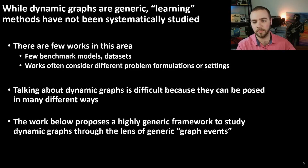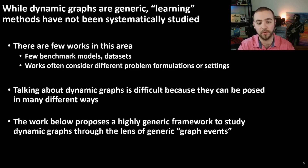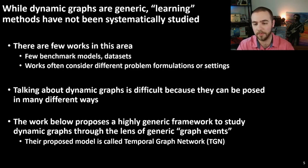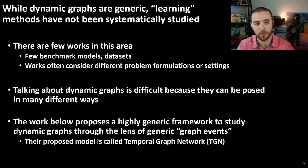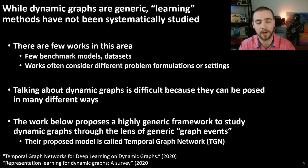We'll be focusing on a single paper that proposes a highly generic framework to study dynamic graphs through the lens of graph events. The proposed model in this paper is known as the Temporal Graph Network, or TGN. This paper encompasses many previous works in the area of dynamic graphs, so it acts as a really great starting point if you're looking at dynamic graphs in any way, shape, or form.